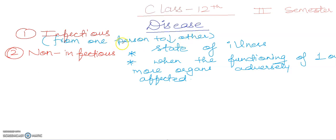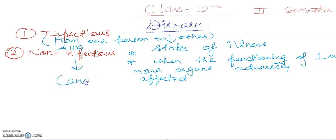Non-infectious diseases are those which do not occur due to infection. Infectious diseases are very common and every one of us suffers from them at some time. Some infectious diseases like AIDS are fatal — meaning they are death-causing. For non-infectious diseases, cancer is an example; it does not transmit from one person to another but is a major cause of death.